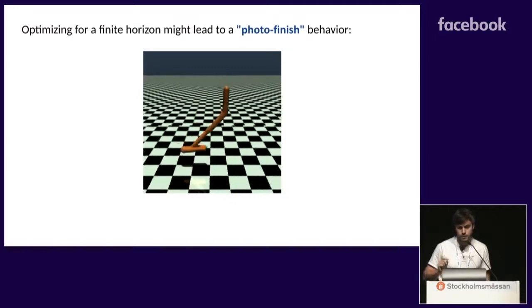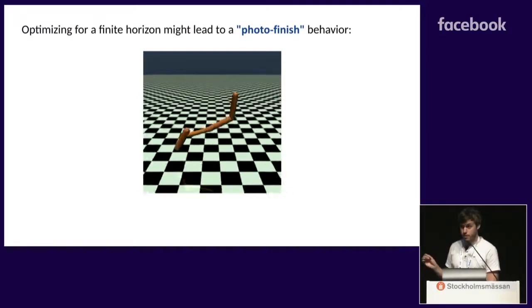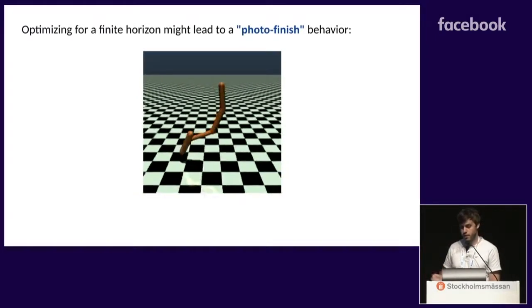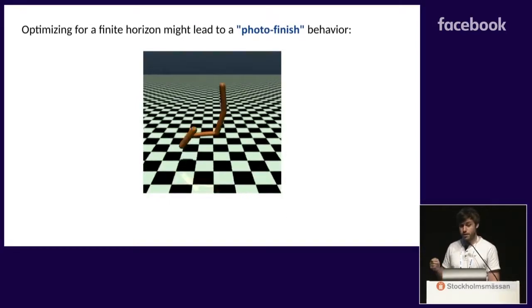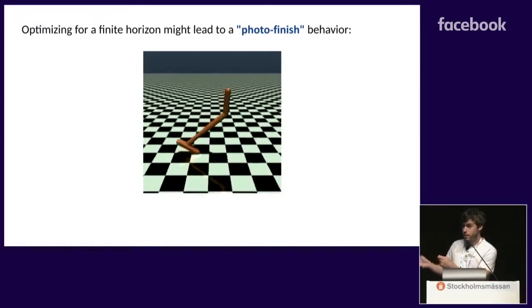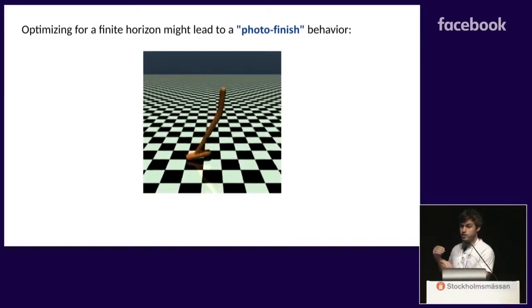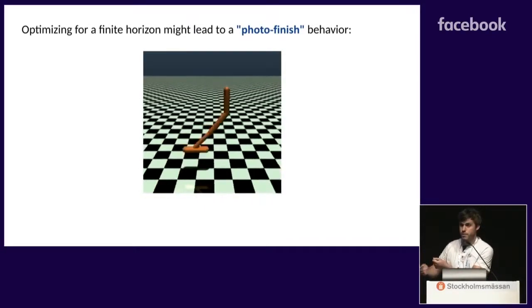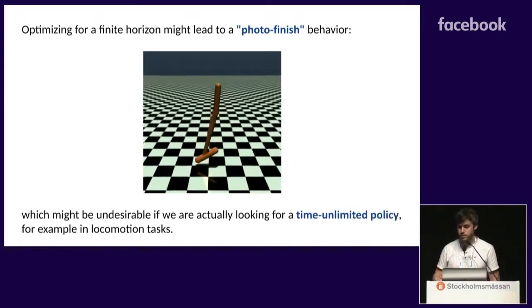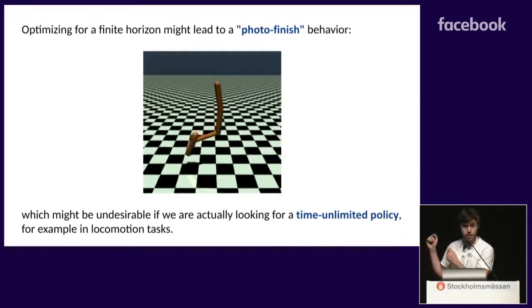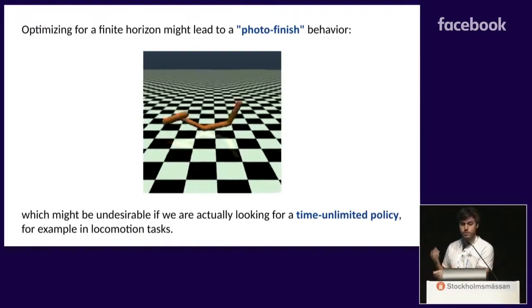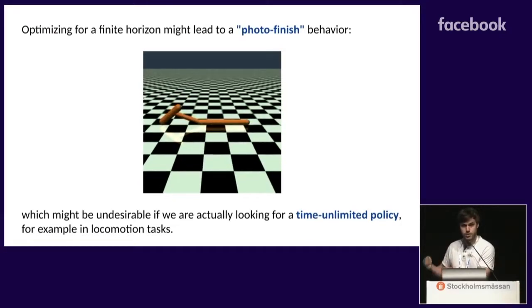So now, there is actually an issue if you do time limit and, for example, you use time awareness, which is you can have a kind of photo-finish behavior. Your agent is really trying to optimize for the time limit, so it will, for example, jump at the end of the episode to maximize the distance. And this is probably not what you want to do for a locomotion task. You probably want to learn a very efficient policy that can jump indefinitely.